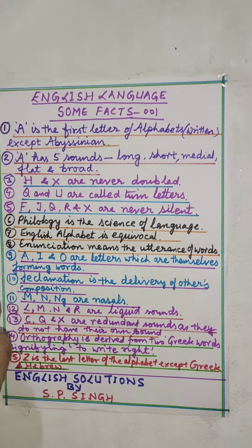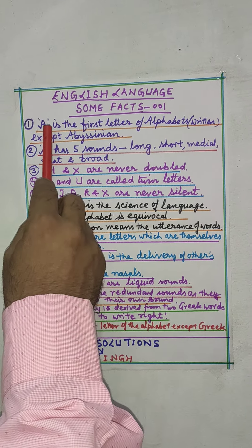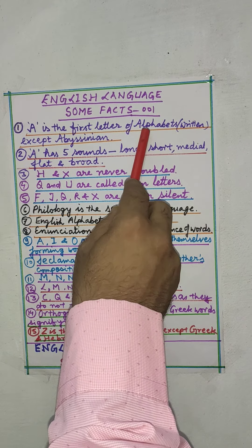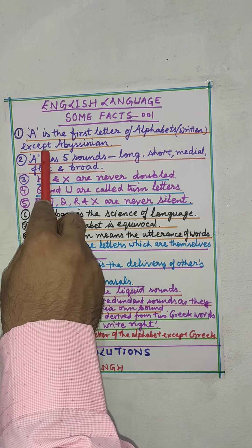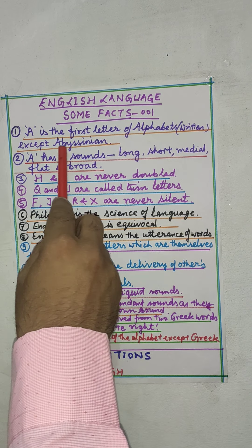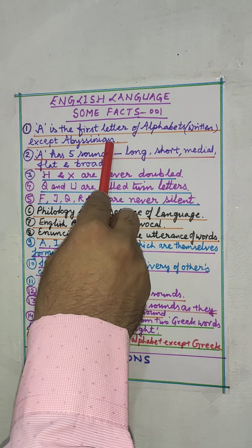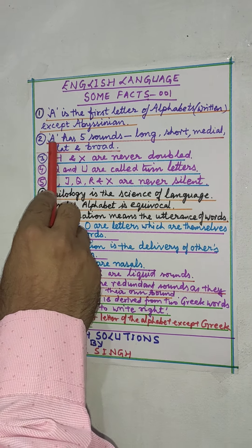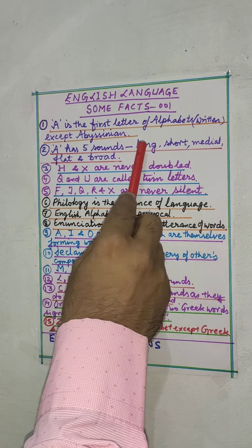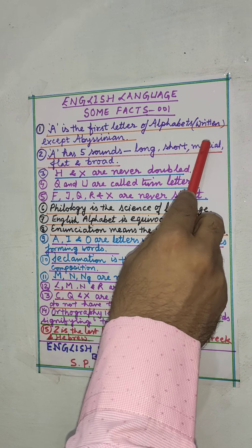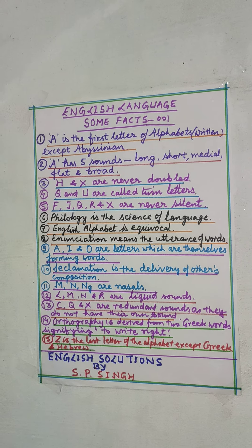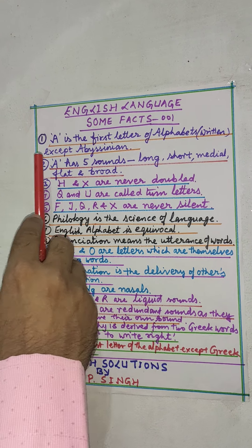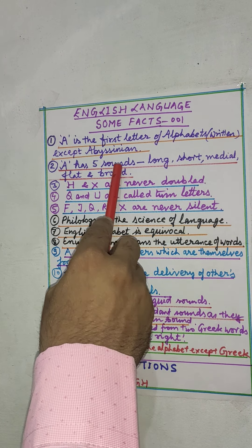The first fact is that A is the first letter of alphabets, except in Abyssinian — meaning only in one language it is not the first letter. A has five sounds: long, short, medial, flat, and broad. You have to keep in mind that the letter A has five different sounds.